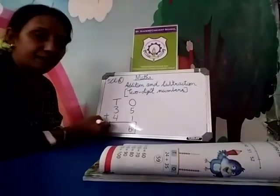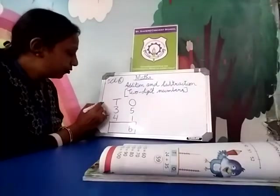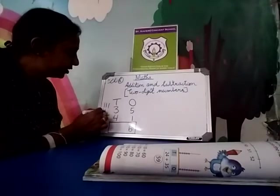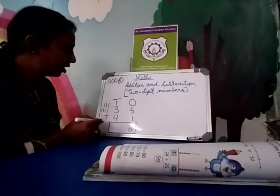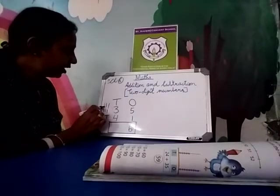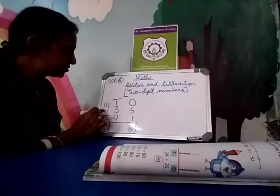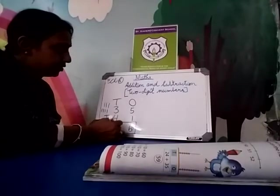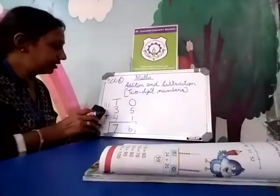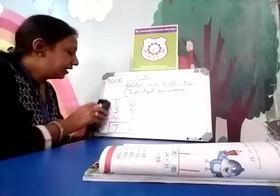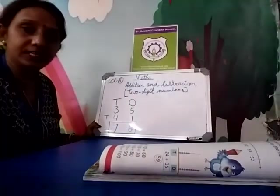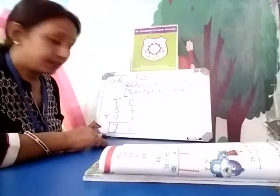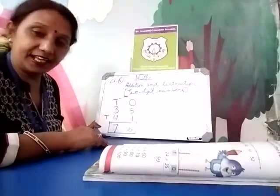Add 3 and 4 by drawing 3 lines and 4 lines. Count all: 1, 2, 3, 4, 5, 6, 7. And about what I taught — when you add 1 in any digit it is the next number, so 5 plus 1 is 6. This week you have learnt addition in two digits with ones and tens.